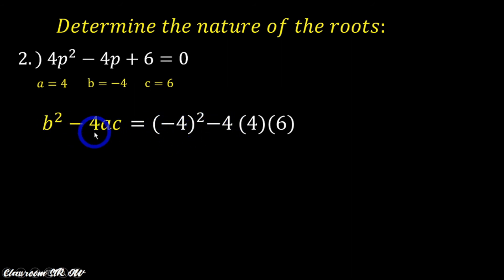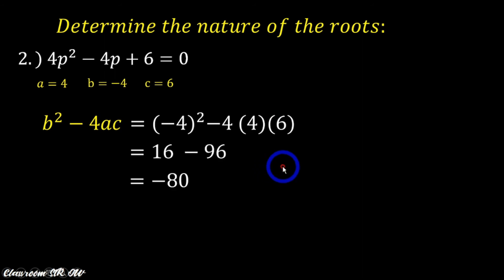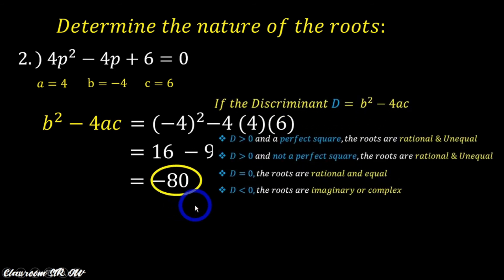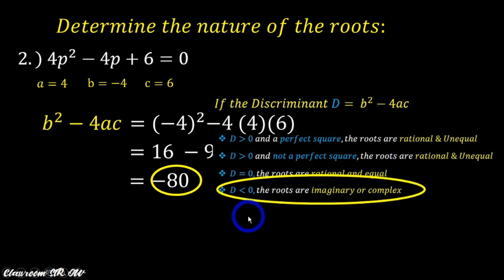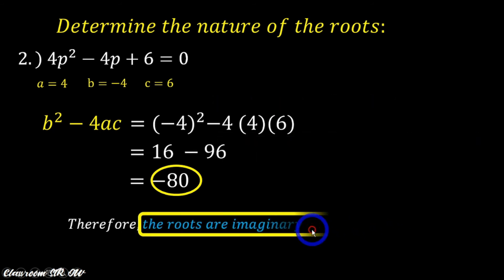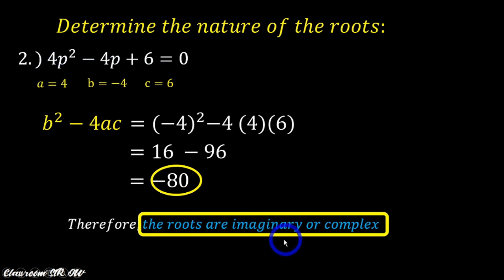Minus 4, and our a is 4, and our c is 6. Simplifying this further, that gives us negative 80. Now, negative 80 — recalling our summary — if d is less than 0, then the roots are imaginary or complex. Therefore, the roots of this quadratic equation are imaginary or complex.